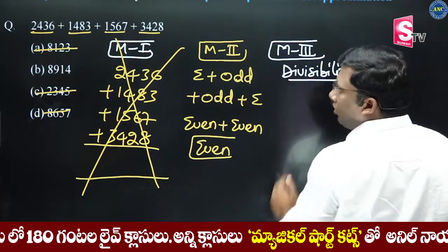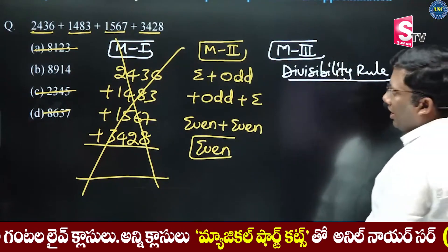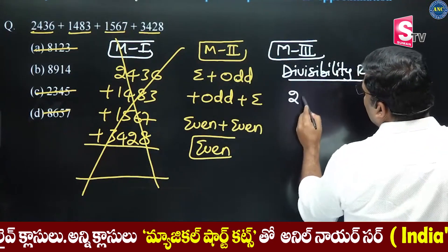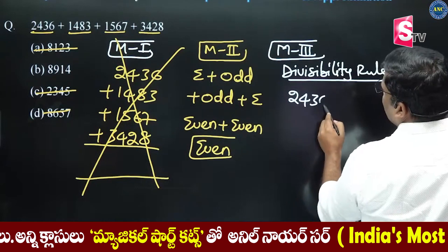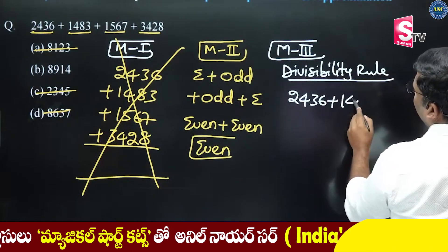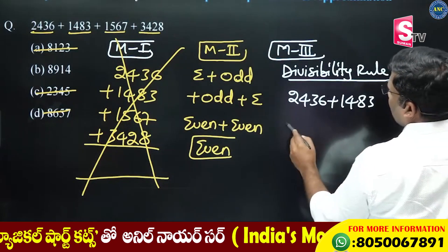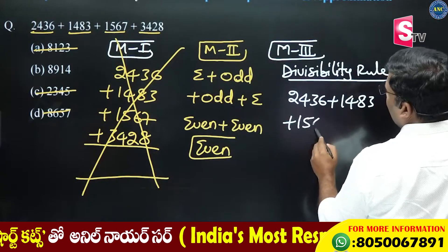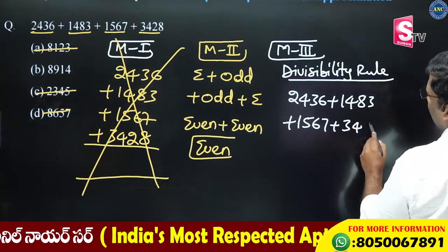Divisibility rule. Right? Now, students, it is clear. 2436 plus 1483 plus 1567 plus 3428.